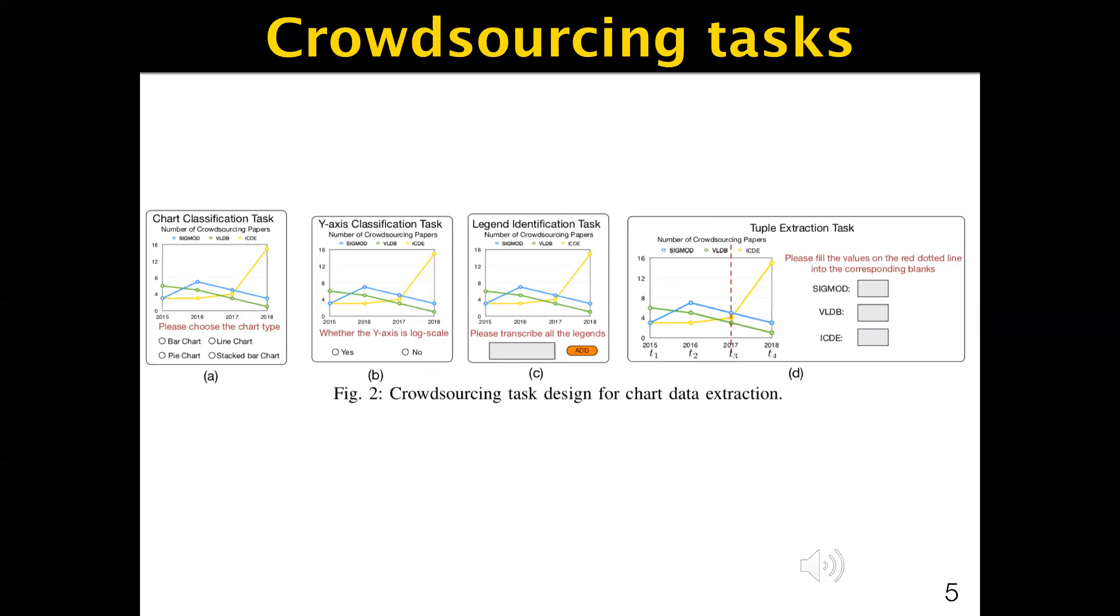The third is the legend identification task. Legend is also hard for machines to identify as it has different patterns and may be located arbitrarily in the chart. Given a chart C, the task is a fill-in-blanks question that asks the crowd to collect the labels of legend keys.